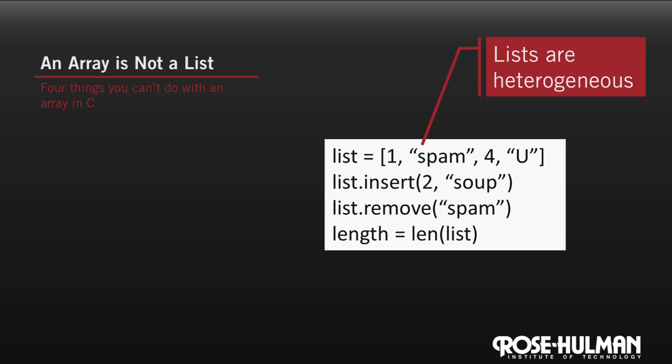Arrays in C can only contain elements of the same type. For example, we can have an array of ints in C, but cannot easily create an array that mixes ints and strings. Technically speaking, Python lists are said to be heterogeneous, while C arrays are homogeneous.